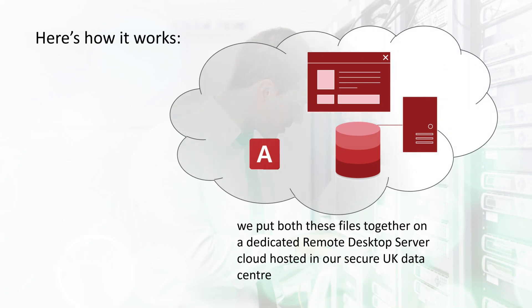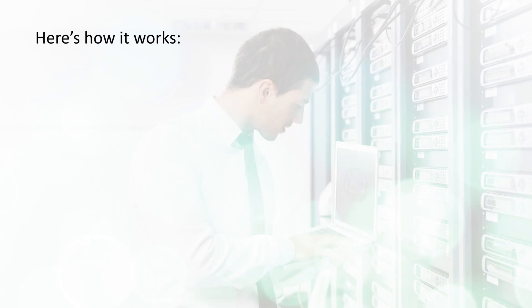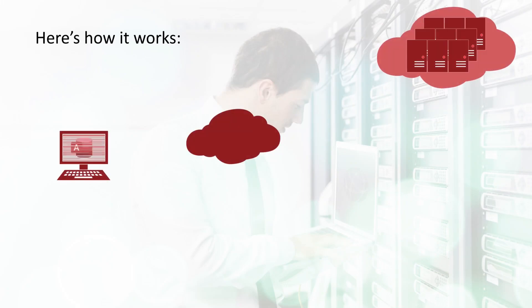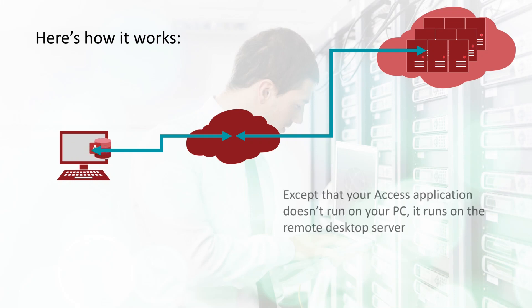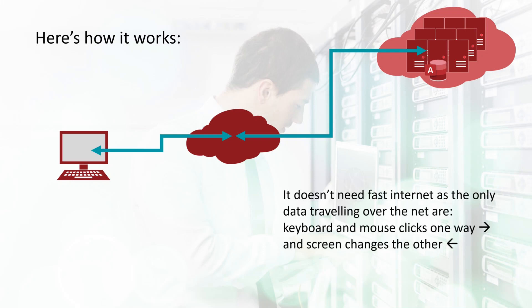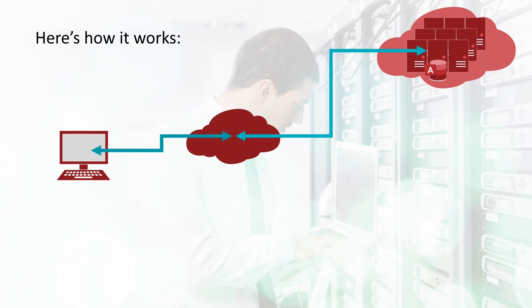These used to be called terminal servers. As nothing runs on the local PC, it behaves like a simple dumb terminal. You run your Access database as a remote application and connect to it over the internet. It will look and feel exactly the same as if it was running on your computer, but Access doesn't run on your computer — it runs on the remote server. The only thing travelling over the internet is keyboard and mouse clicks one way and screen changes the other way.